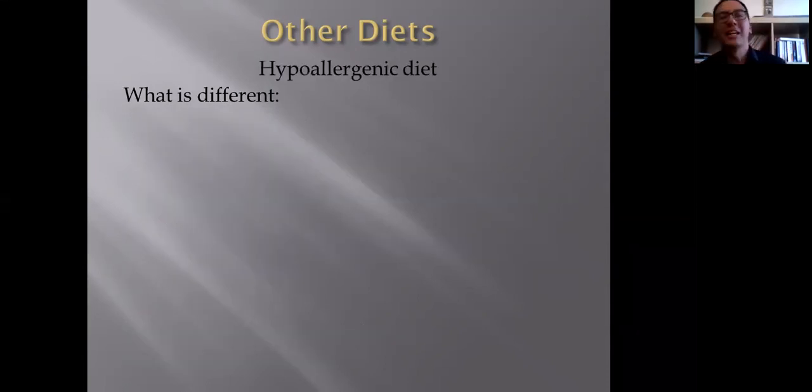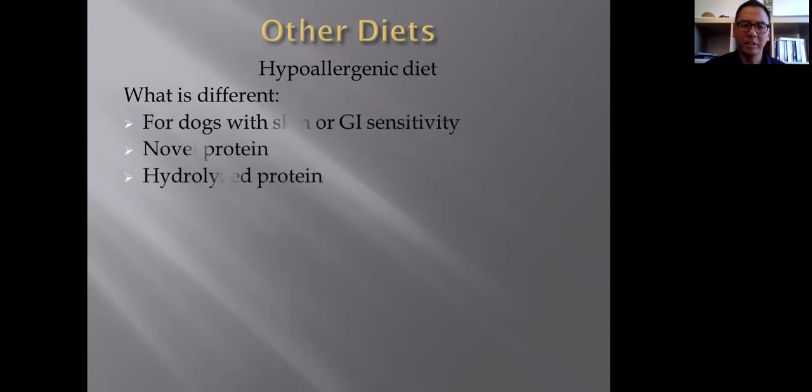Another diet to discuss is hypoallergenic diet. So we've heard that being discussed before. So what is different about a hypoallergenic diet? Usually it's indicated for dogs with skin or gastrointestinal sensitivity. It's a novel protein, hydrolyzed protein. So for skin and gastrointestinal sensitivity, some form of allergy, some form of sensitivity to some particular potential food allergy.